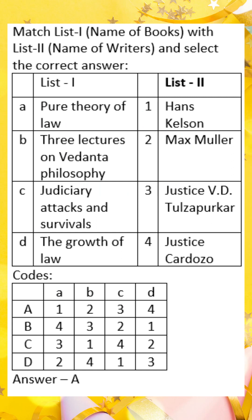The pure theory of law is closely related to Hans Kelsen, a jurist and legal theorist who developed the theory in the early 20th century. Kelsen's pure theory of law is a legal positivist theory that seeks to describe the law as it is, not as it should be.